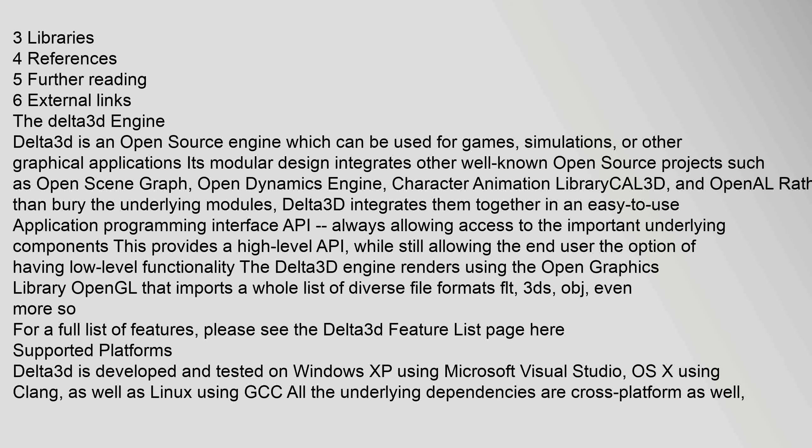Delta 3D always allows access to the important underlying components. This provides a high-level API while still allowing the end-user the option of having low-level functionality. The Delta 3D engine renders using the OpenGraphics Library (OpenGL) and imports a whole list of diverse file formats including FLT, 3DS, OBJ, and more. For a full list of features, please see the Delta 3D feature list page.